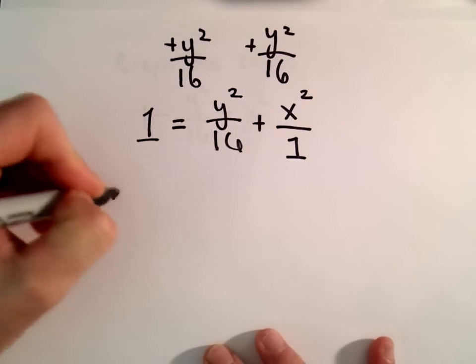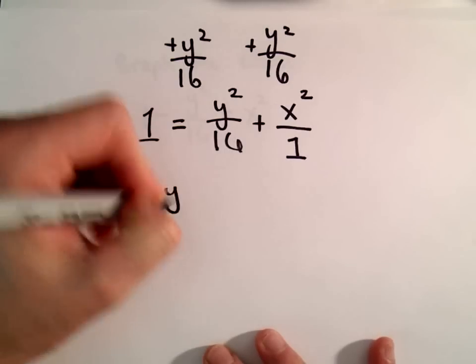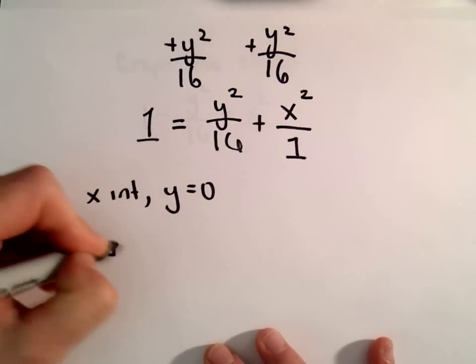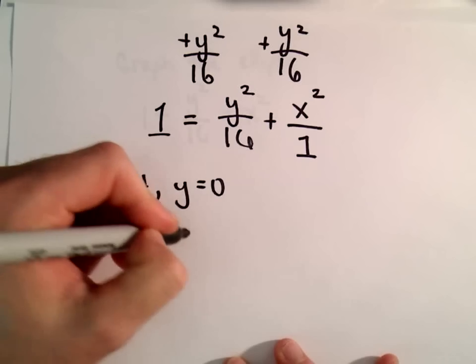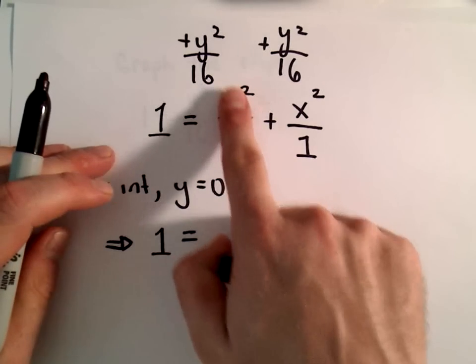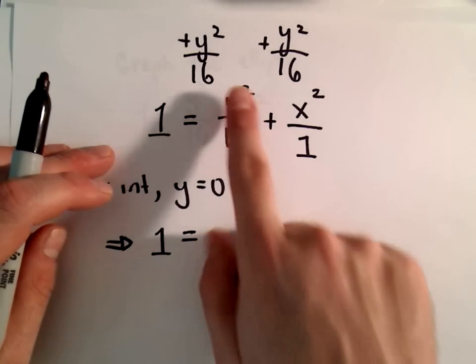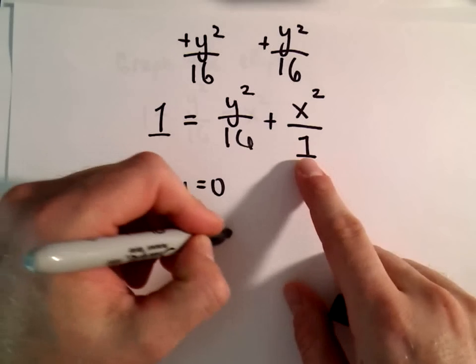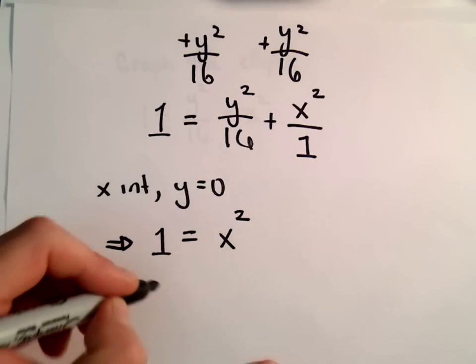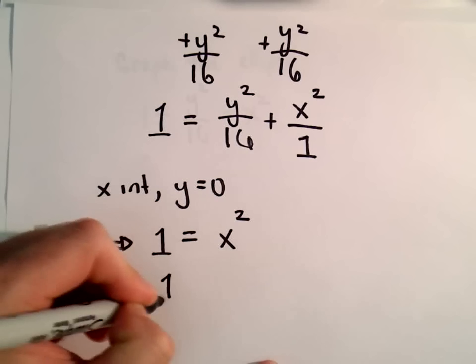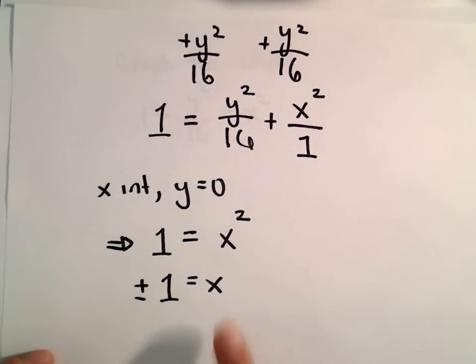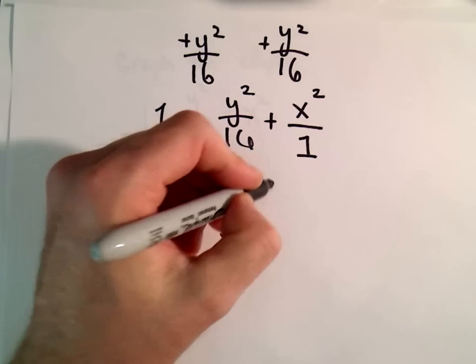To find the x intercepts, we let y equals 0. So if we plug in y equals 0, our first term will just be 0 squared over 16, which is 0. So we're left with x squared over 1, or just x squared. And if we take the square root of both sides, we'll simply get that x equals positive and negative 1.